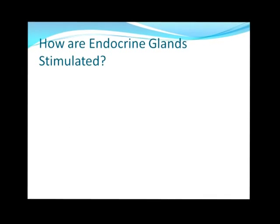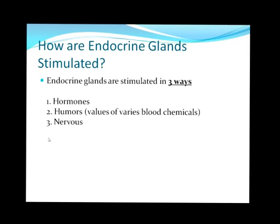How are endocrine glands stimulated? They are stimulated in three ways: by other hormones — those tropic hormones; by humoral signals, meaning values of different chemicals in the blood like glucose, calcium, sodium, and potassium; and by the nervous system — a good example being the adrenal medulla being stimulated to produce epinephrine and norepinephrine by the sympathetic nervous system.